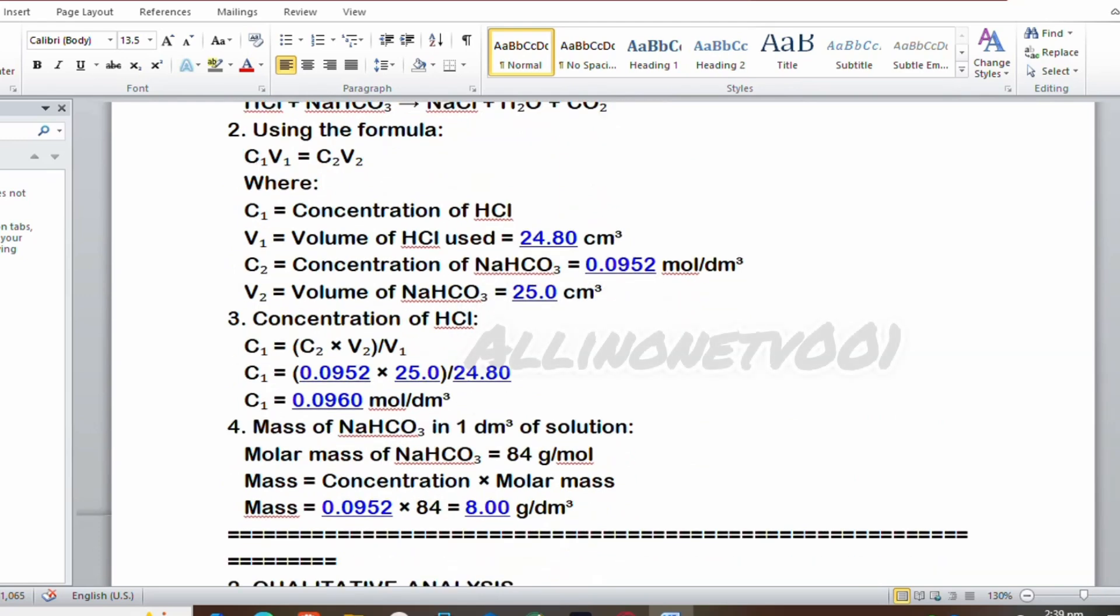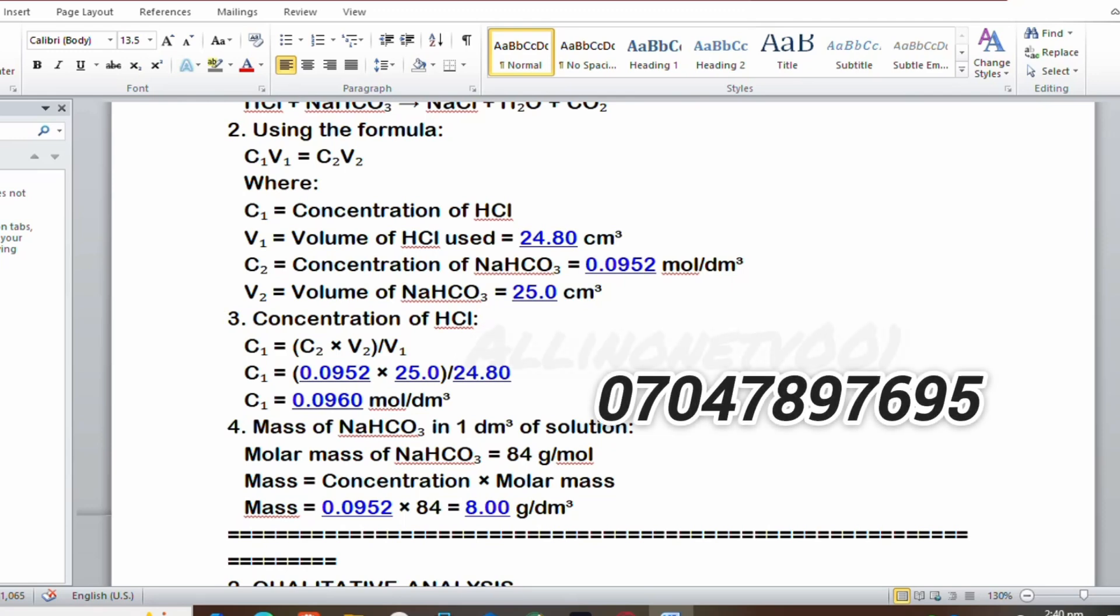The concentration of hydrochloric acid is 0.0096 mol/dm³, and the mass of sodium hydrogen carbonate is 8.0 g/dm³. The exam will be coming up on the 30th, I think it's on Tuesday. There's 80% to 90% accuracy that this may be the question, so practice. You can DM me on WhatsApp. I'll put the number on screen right now.